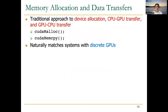In the past, at the beginning of the GPU computing era, it wasn't possible to have a unified view of memory in the traditional approach. We had to do double memory allocation on the host processor and on the device — typically the GPU — and also use CPU-GPU or GPU-CPU data transfers to move data from one device to another. This is a model that naturally matches systems with discrete GPUs.